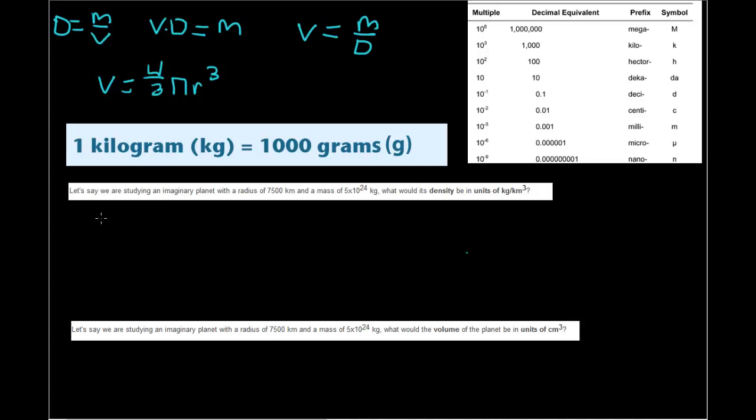All right, so we have density equals mass over volume. So we can plug in mass, which is right here. Density equals 5 times 10 to the 24 kilograms.